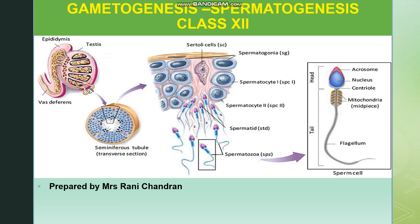Hi students, today let us continue with the chapter human reproduction of class 12. Last session you learned about the parts of the male reproductive system, and now let us learn about the first event in sexual reproduction, that is gametogenesis.